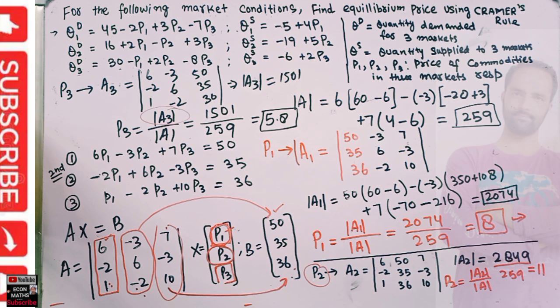So we got the equilibrium values: p1 = 8, p2 = 11, and p3 = 5.8. To apply Cramer's Rule: replace the first column for p1, second column for p2, and third column for p3 of the coefficient matrix with the constant vector. This concept is explained in more detail in another video in the matrix algebra in economics playlist.